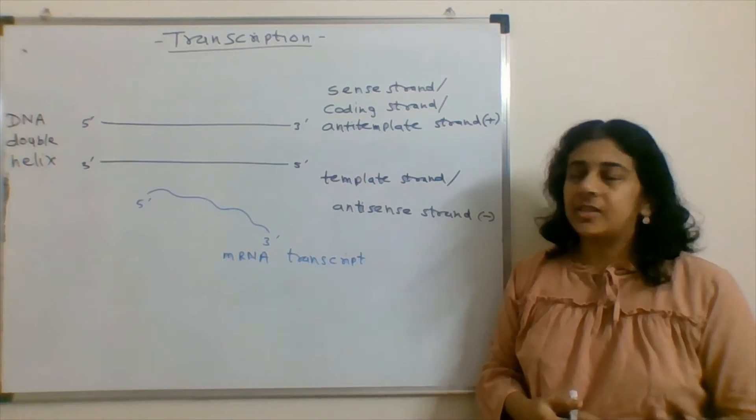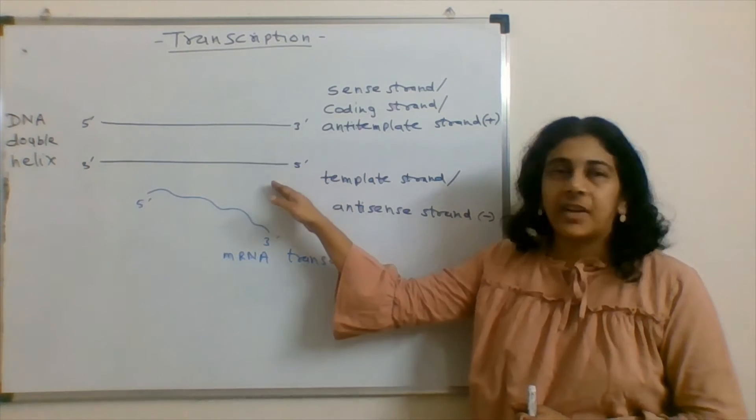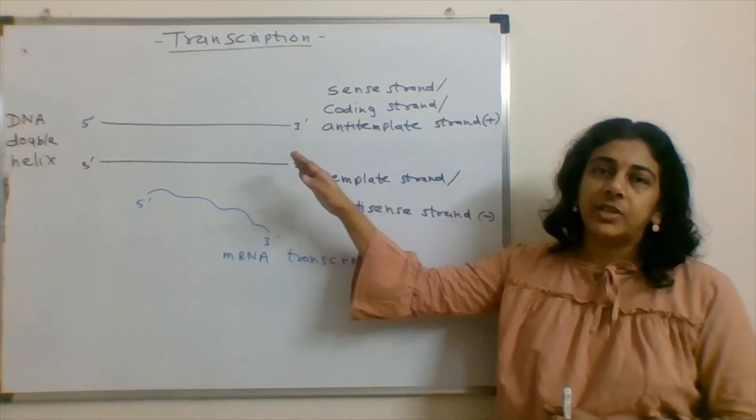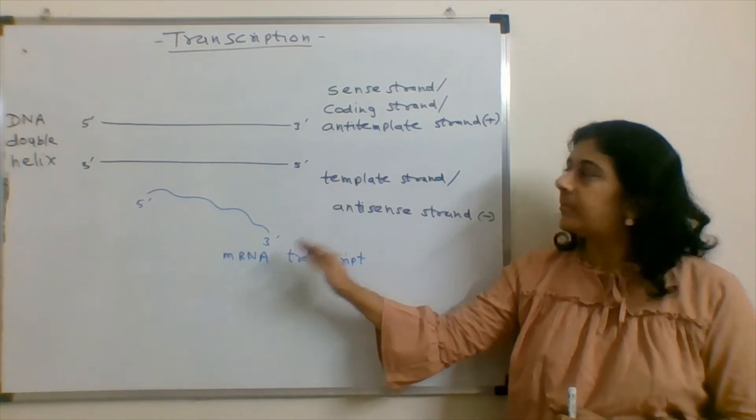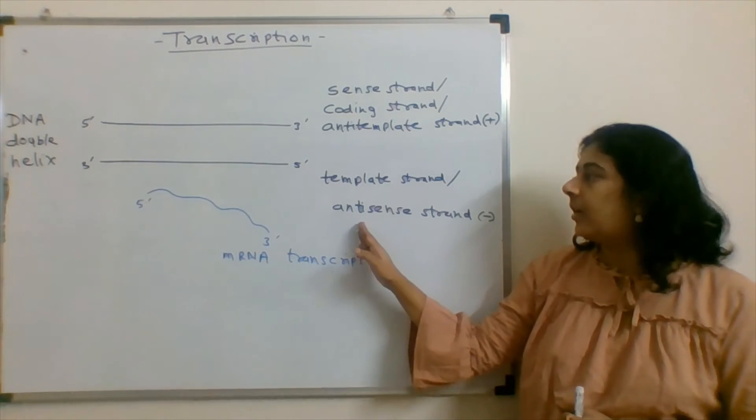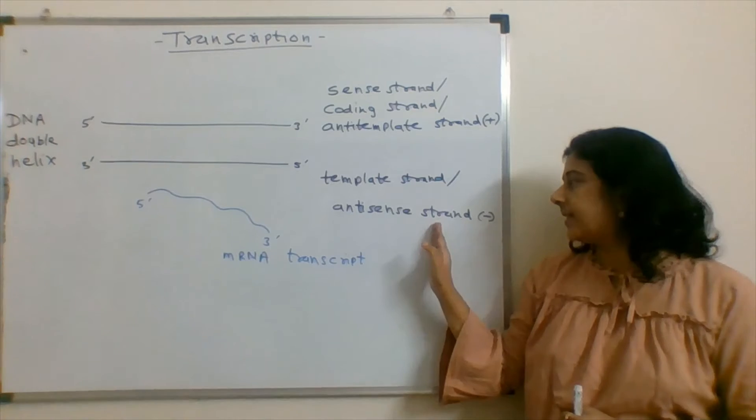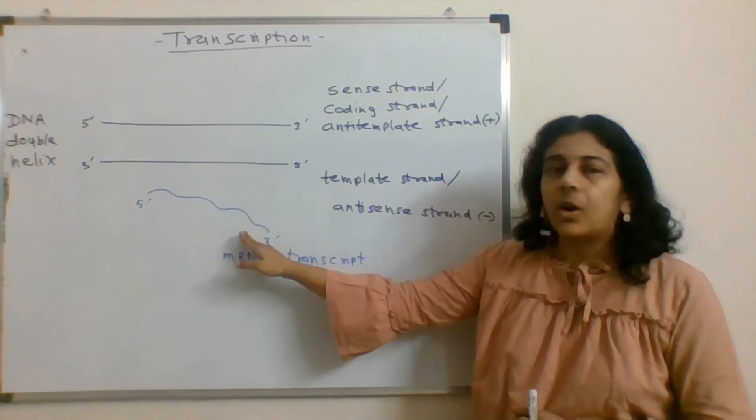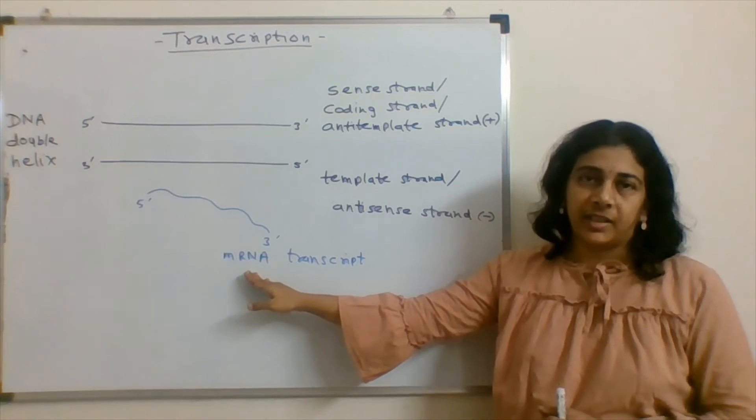Now, in concern with our question, what are these strands called? The strand from which the mRNA is going to form, we call that strand as a template strand or it is also called as antisense strand or negative. This strand will be complementary to the mRNA.